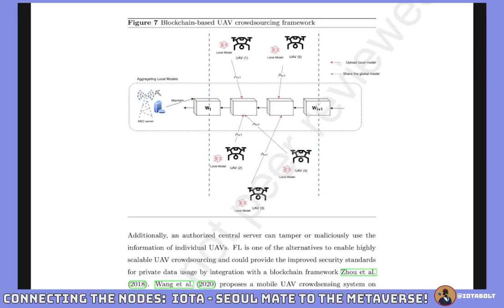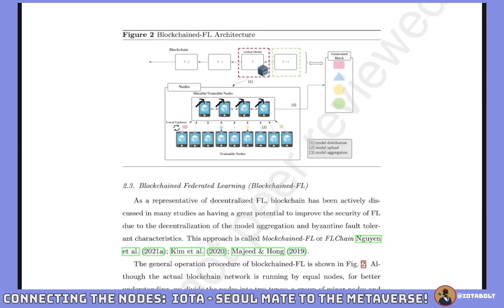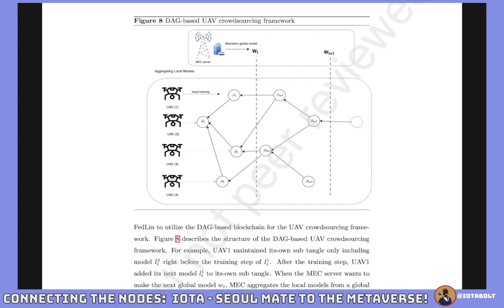While blockchain federated learning can solve the tampering issue, it can't solve the straggler problem — where you have to wait for all information to be received before completing a new global model — or the heterogeneous device issue, where you have multiple devices of different CPU sizes, storage sizes, and internet capabilities transmitting data at different rates. You need an asynchronous type environment. I won't bore you with all 41 pages of this research, but I encourage you to check it out — I'll link it on my Twitter page.